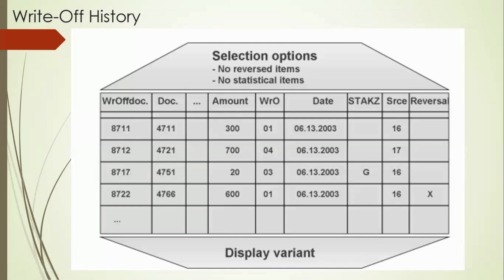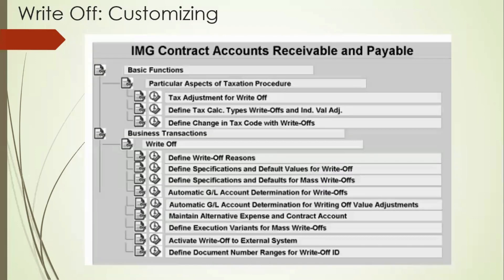Everything is clear internally and the customer is now clear from collection — we release the collection part as well. For write-off configuration, we go to SPRO and define the write-off regions, the default write-off conditions, and the general ledger accounts for write-off. You can define a ledger for write-off so when the write-off happens it hits that ledger and gets posted there. Similarly, during write-off we also do the tax adjustment calculation — how much tax we can deduct — and then do the write-off. The tax write-off can be checked in the configuration.